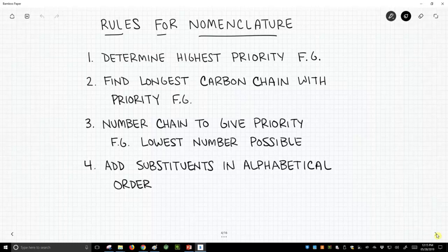At that point, we have to then number our chain, and we can number it two ways. We'll want to number it so our key functional group is closest to the smallest number end of our chain.